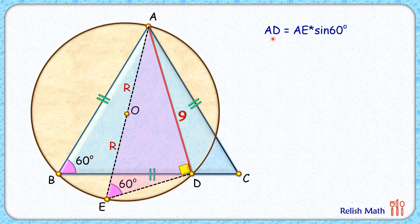Putting the values: AD is 9 cm, AE is 2R, and sin 60 is √3/2. Simplifying, we get R = 3√3 cm and that's our answer. Let's check the second approach which is a logical approach to solve it in 30 seconds.